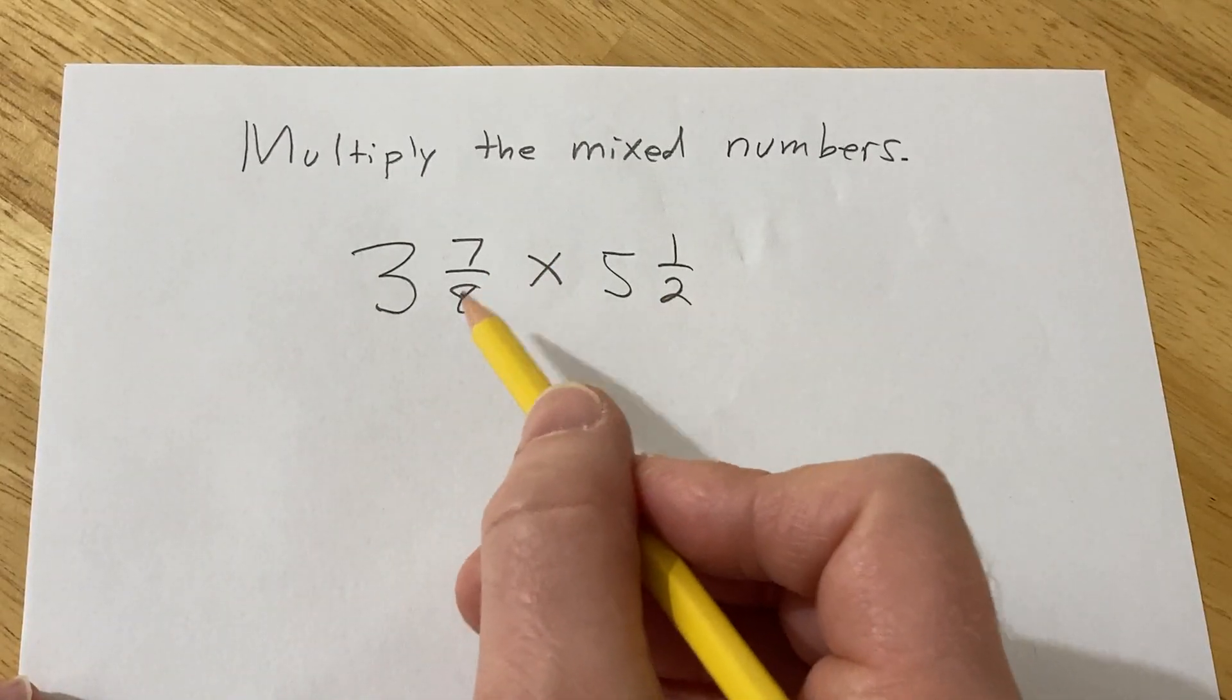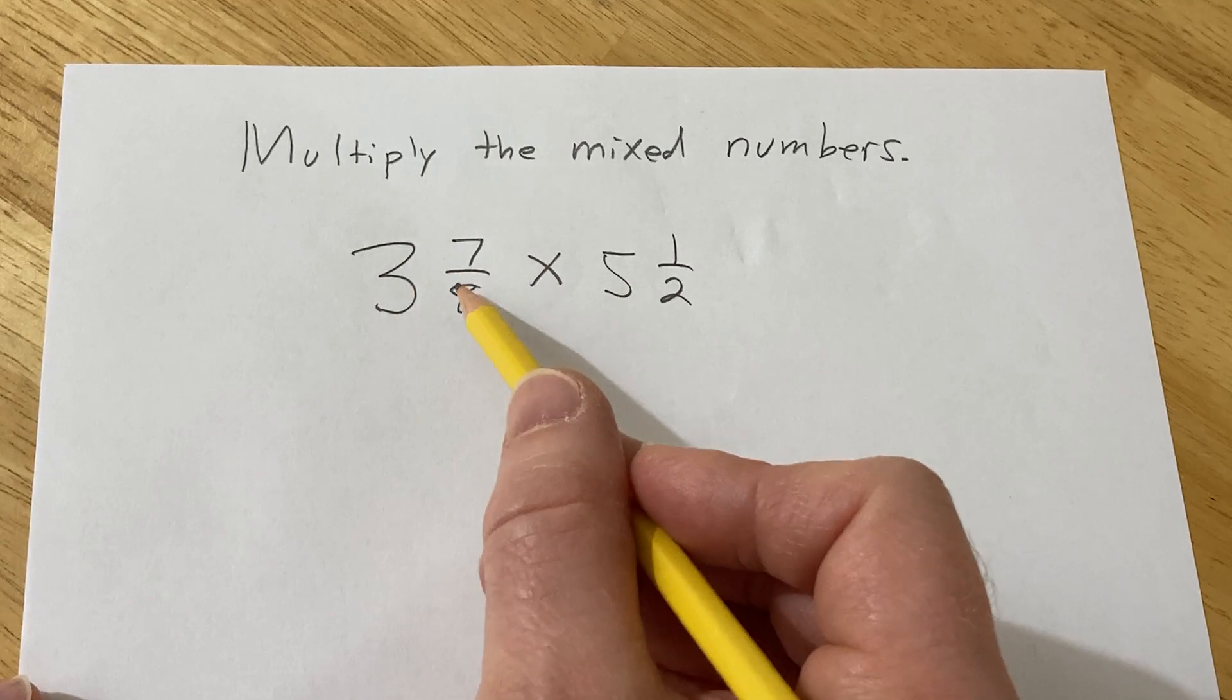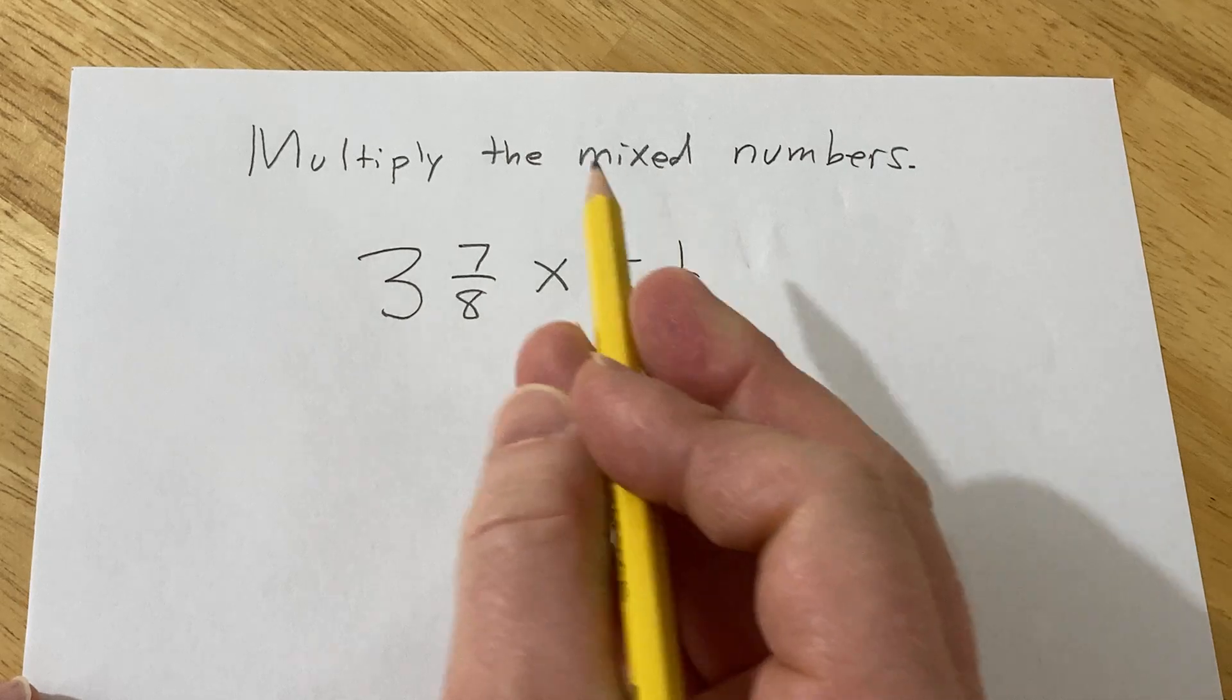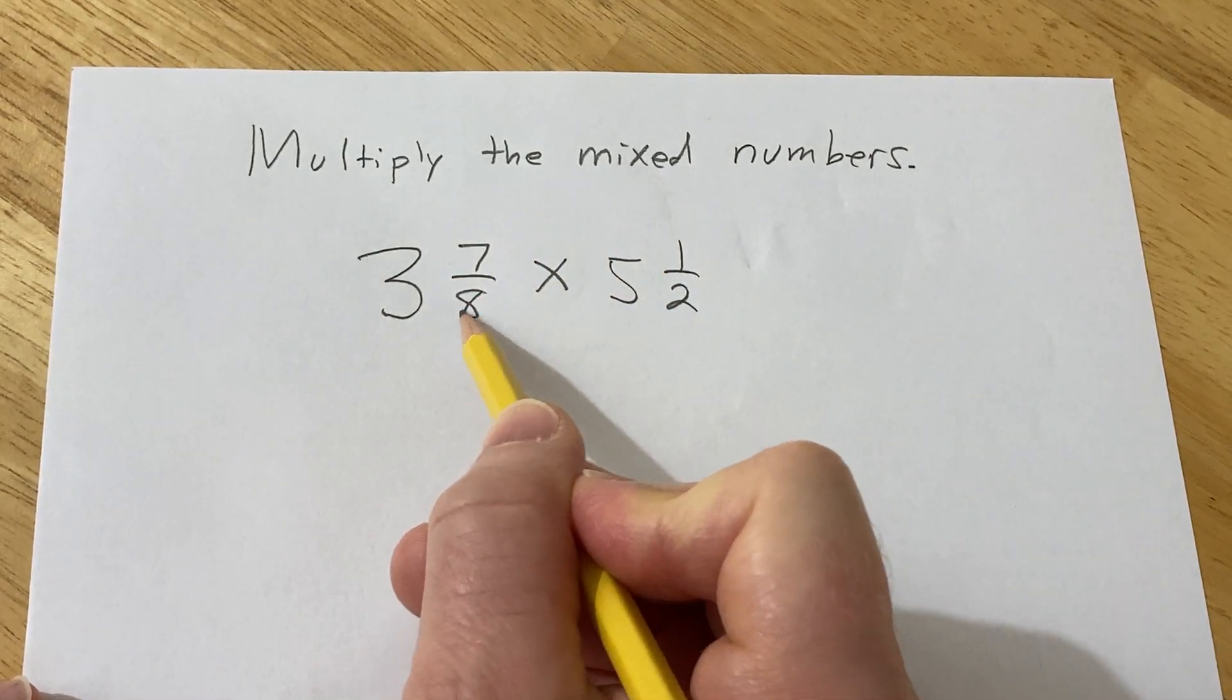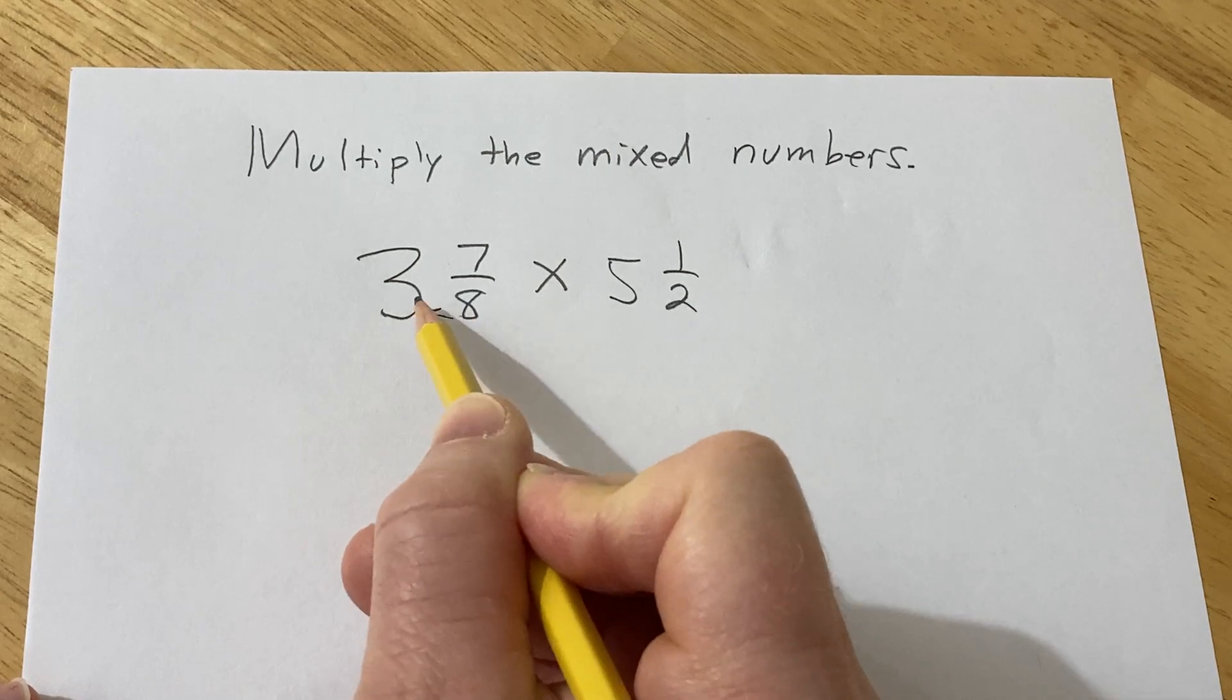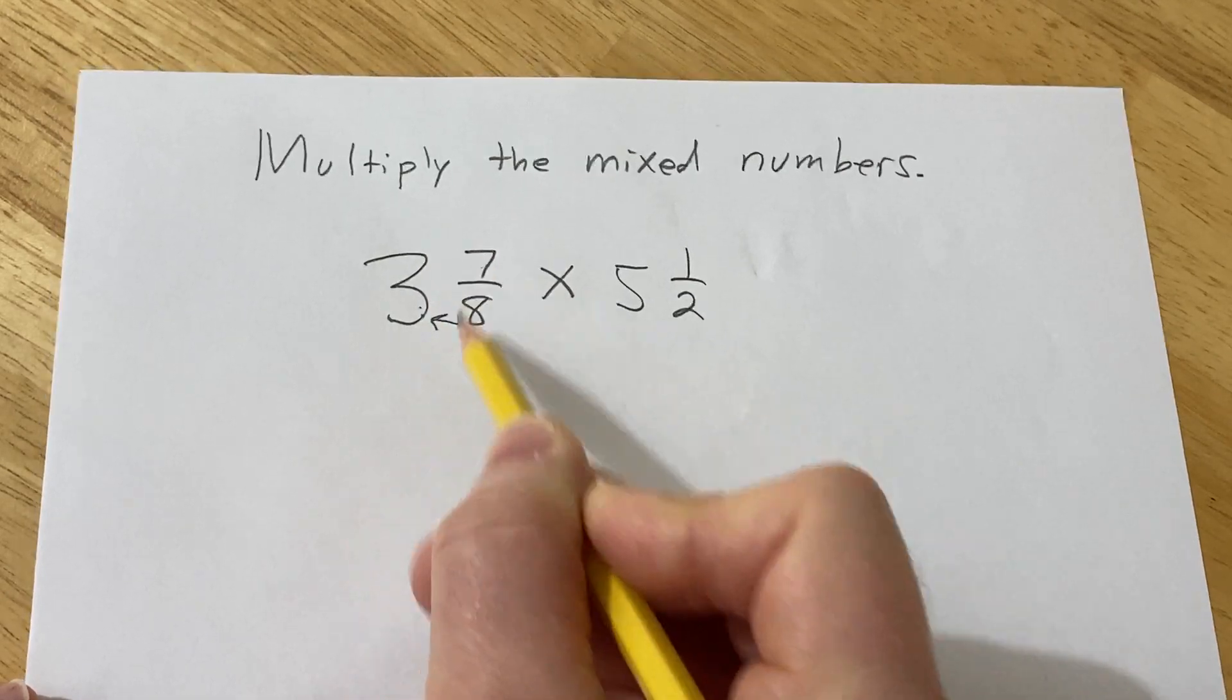So the first thing we're going to do in this example is we're going to convert these mixed numbers into numbers that are not mixed numbers. We're going to turn them into what's called improper fractions. So to do that we basically take this number, this 8, and we multiply it by the 3. 8 times 3 is 24. 24 plus 7 is 31.